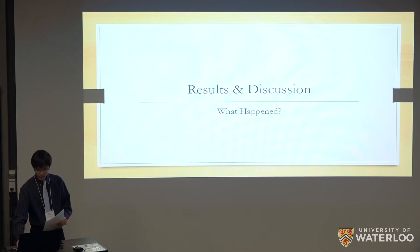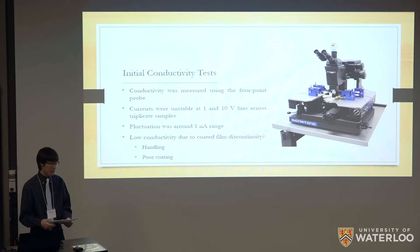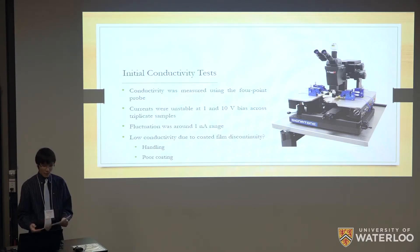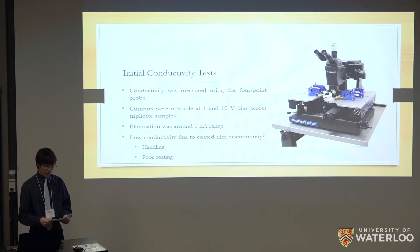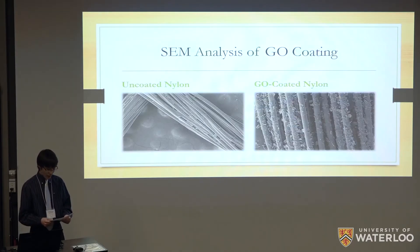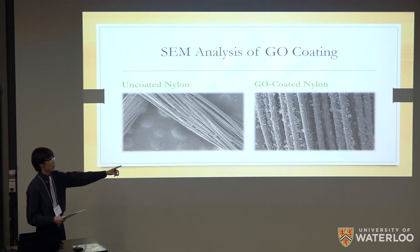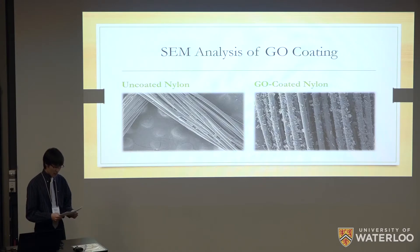After reducing our first wires, we did some preliminary tests for conductivity on the four-point probe to see if our coating and reduction had worked. Unfortunately, the currents we measured were unstable at both 1 and 10 volts across triplicate samples, with fluctuations around the 1 nanoamp range, so clearly our initial attempts had flaws. We hypothesized the issues with conductivity might have to do with the coating being discontinuous, possibly due to physical handling of the threads or our coating procedure not working well. To confirm this, we decided to image our coated threads under SEM. The SEM images of uncoated nylon versus the GO-coated nylon showed that the coating was spotty and not uniform, which is why our threads weren't conductive.